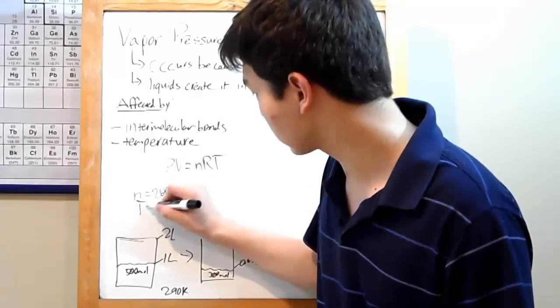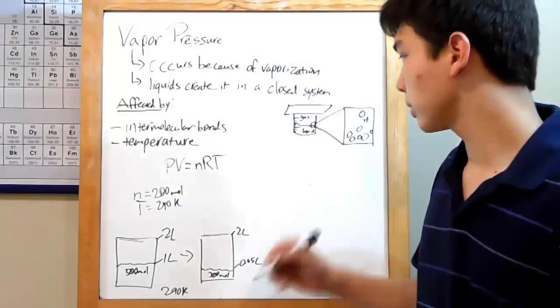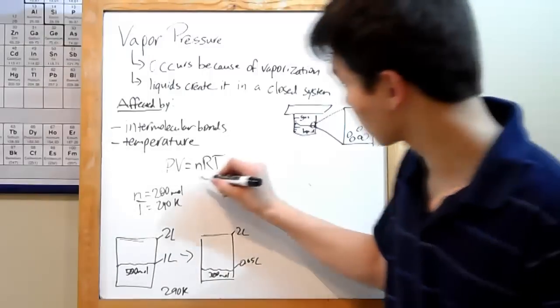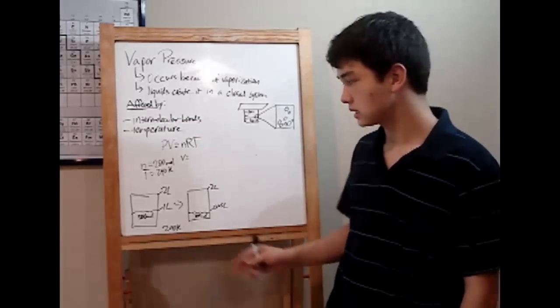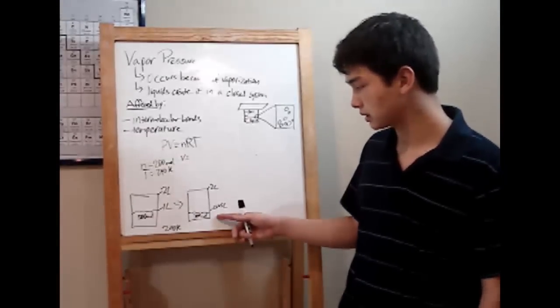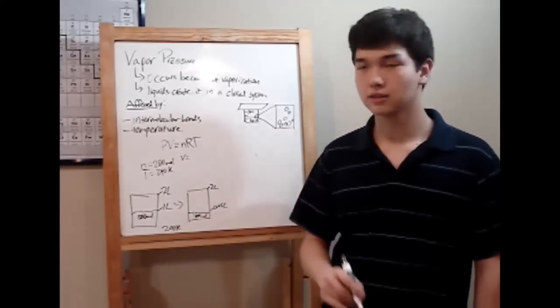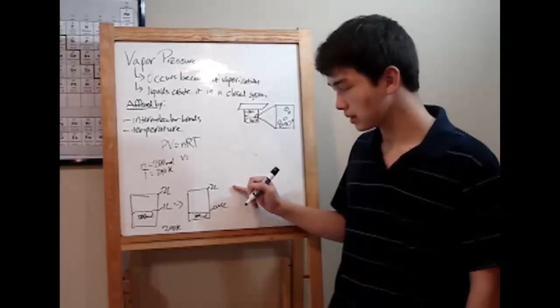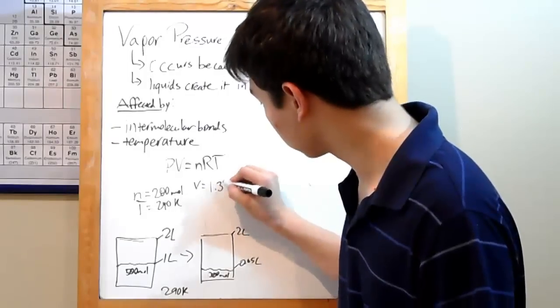We know our T already, that's 290 kelvins. We already have R, since that's a constant, and all we're left with is volume. Remember that a gas will always expand to occupy whatever volume it's got. Since we've got a 2 liter container and 0.65 liters of water, all we have to do is subtract the space the water takes up from the total space to find out how much space the gas takes up. 2 minus 0.65 gives you 1.35, so 1.35 liters.